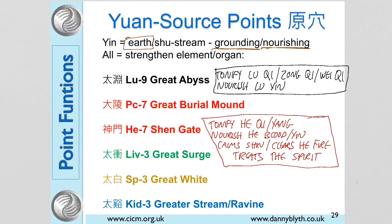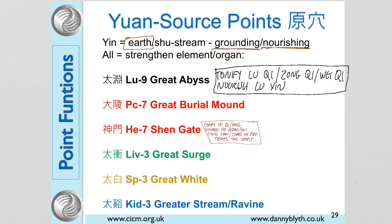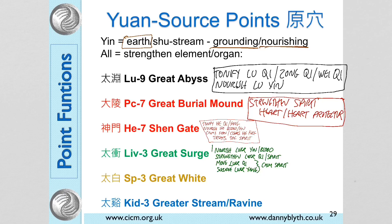Heart 7 nourishes both aspects of the heart — Heart Qi and Yang — and nourishes Heart Blood and Yin. It can calm the Shen by either moving Liver Qi or subduing Liver Yang or Liver Heat. Liver 3 nourishes Liver Yin and Blood, strengthens Liver Qi and the spirit. It can also calm the spirit by moving Liver Qi or subduing Liver Yang or Liver Heat.